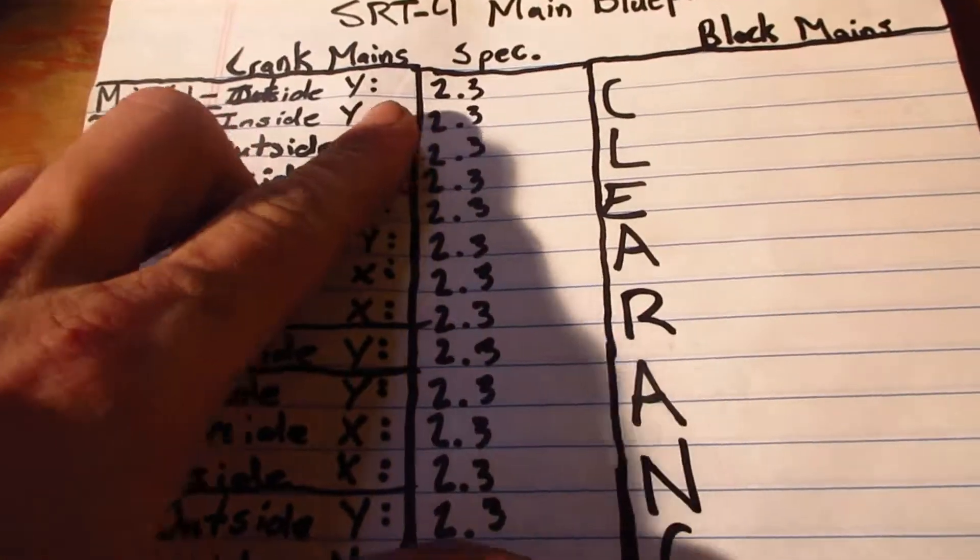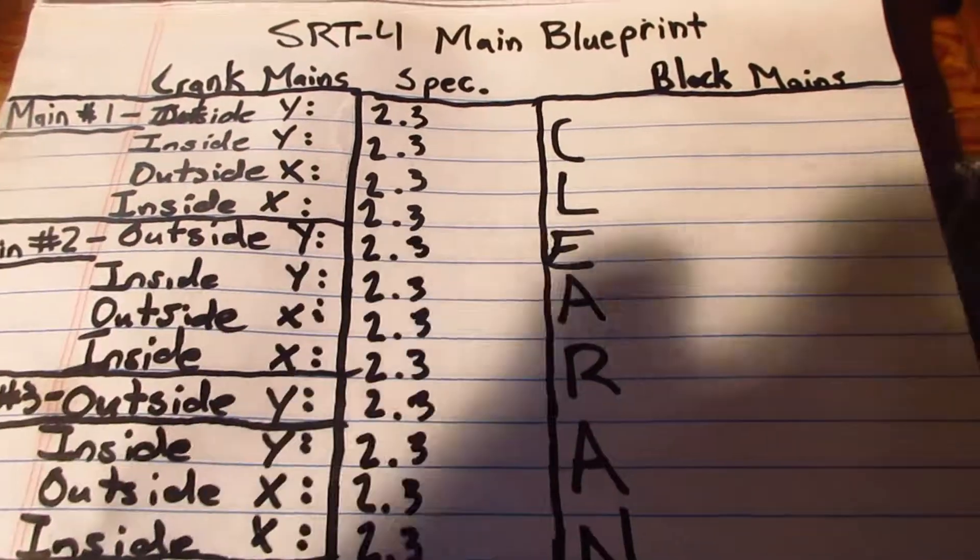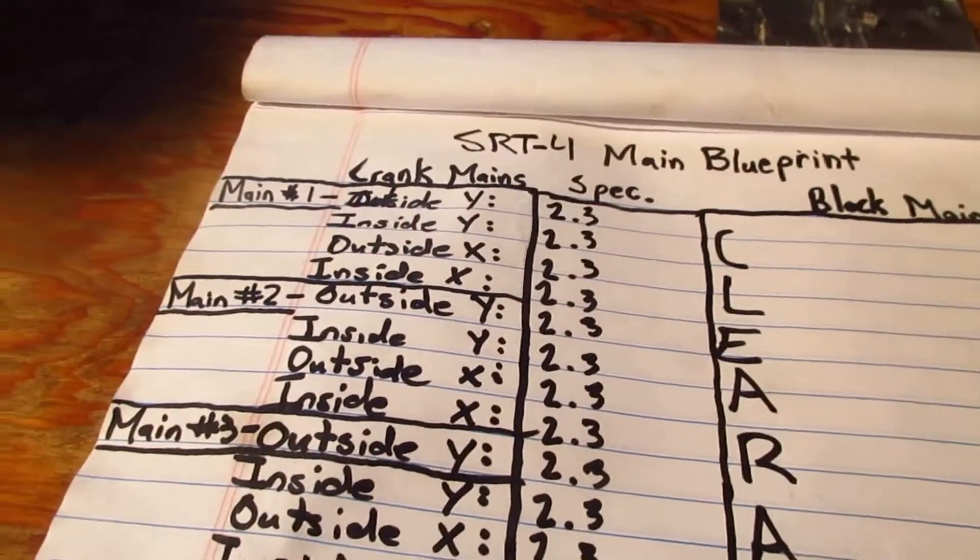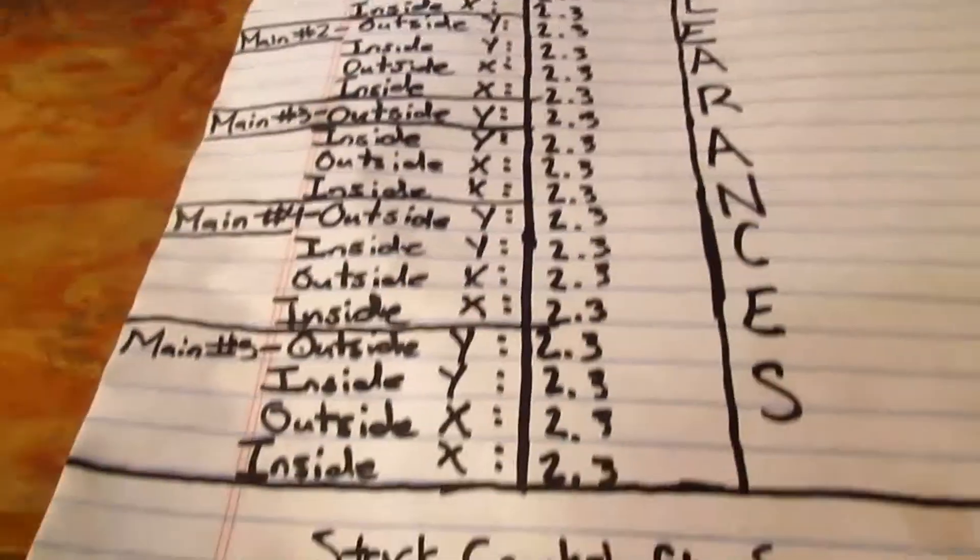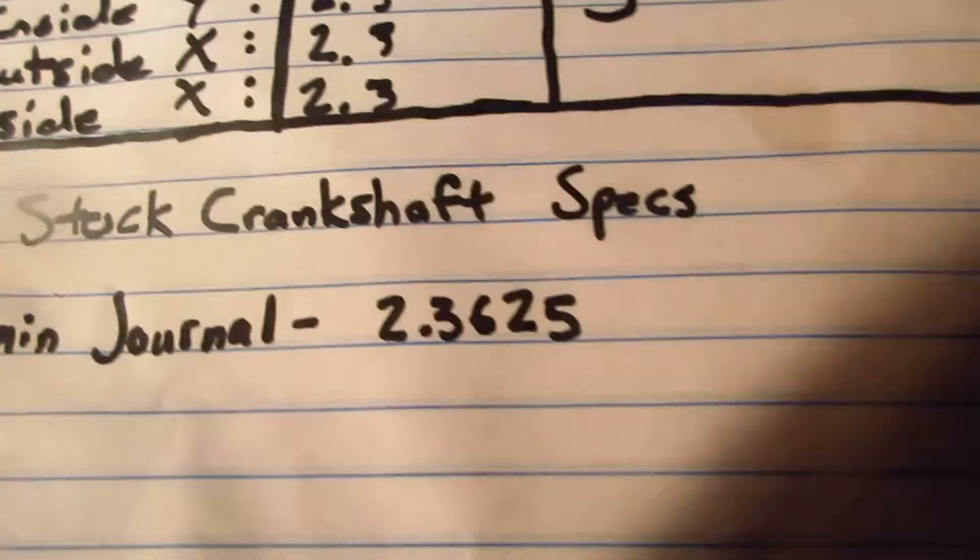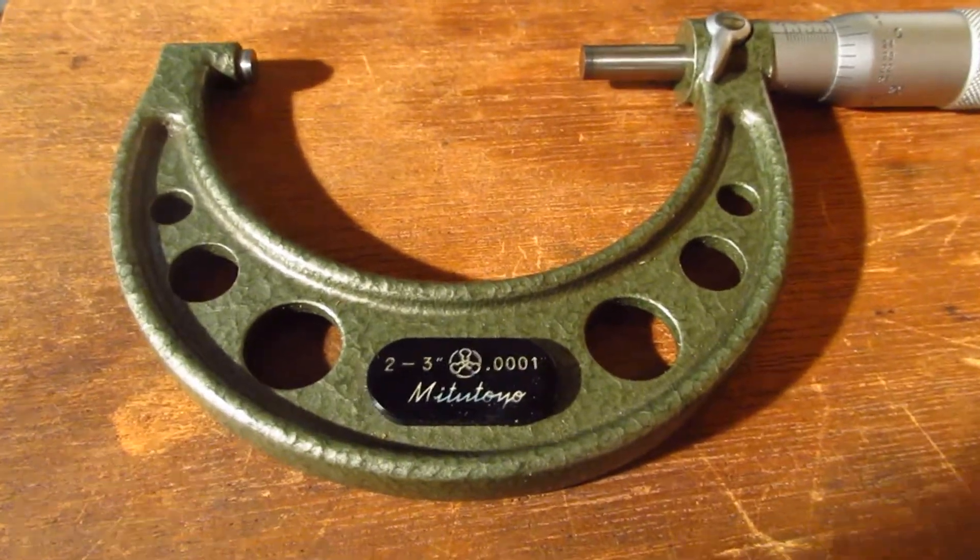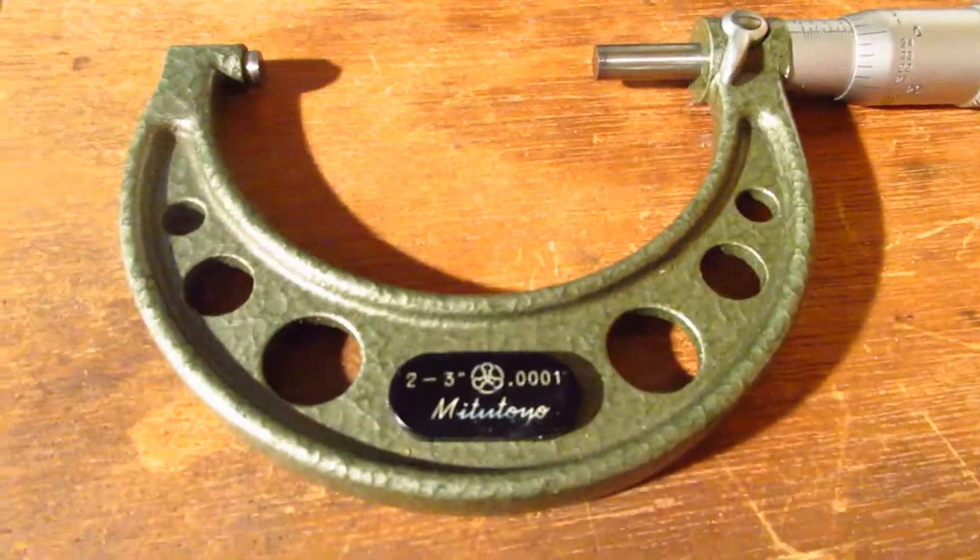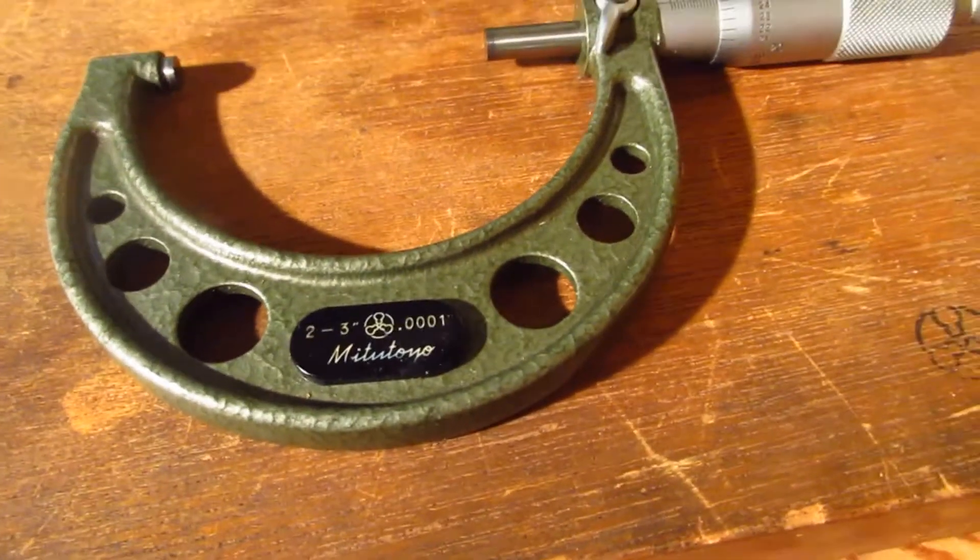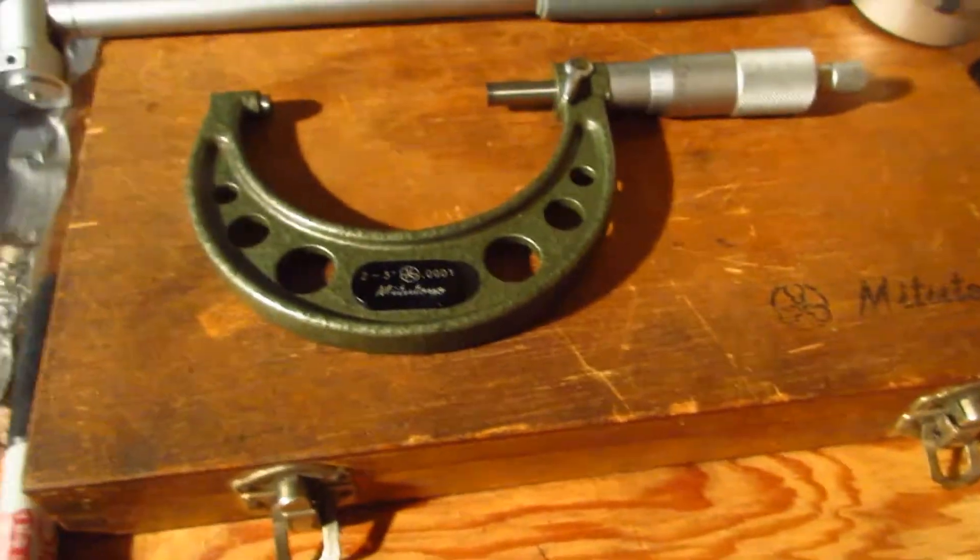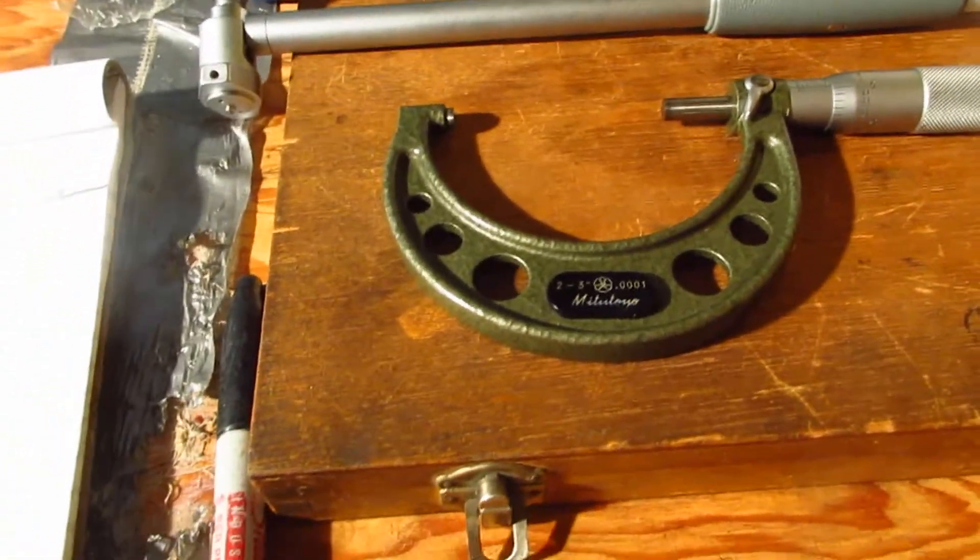I've already got 2.3 written, because I know they're going to fall within 2.3-something because the stock journal measures in at 2.3625. Now I already know this micrometer is off half a thousandth, so I have to make sure that I do the math and subtract that from each crankshaft main journal diameter that I get.